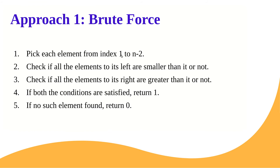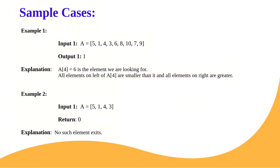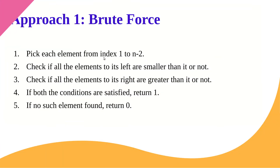Approach 1 is the brute force approach. We loop through each element from index 1 to n-2, checking all elements to its left and all elements to its right. If all elements to the left are smaller and all elements to the right are greater, return 1. If no such element is found after checking all candidates, return 0. This is O(n²) complexity.